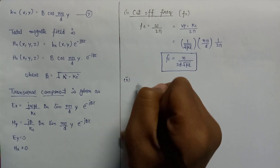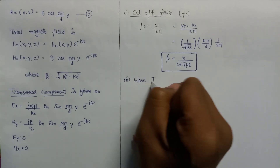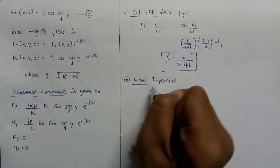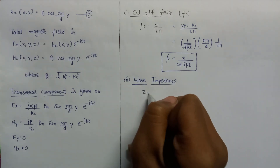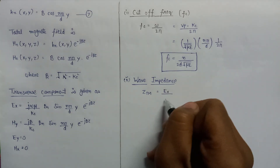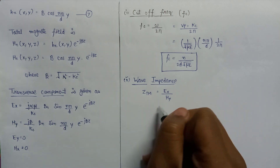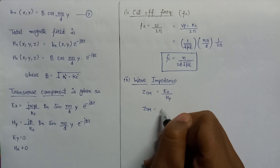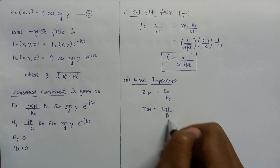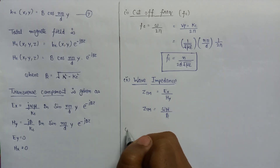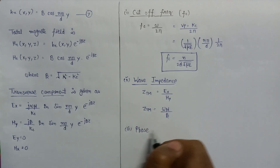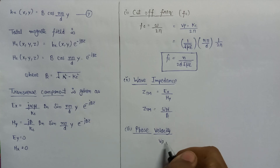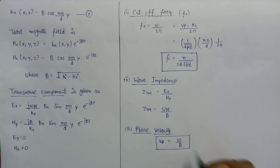The second parameter is wave impedance, represented by Z_TE, which equals Ex over Hy. In terms of phase constant and permeability it is given as ωμ/β. The third parameter is phase velocity, represented by vp, which equals ω/β. This concludes the discussion of TE mode for the parallel plate waveguide and its propagation.